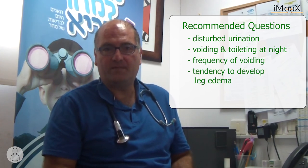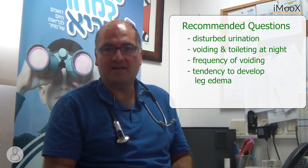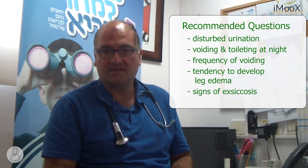Addressing the quality of life of older people with chronic kidney disease, the following questions may help to tailor person-centered care: disturbed urination such as pain while urinating, voiding and toileting during the night, frequency of voiding, tendency to develop leg edema, and signs of exicosis.